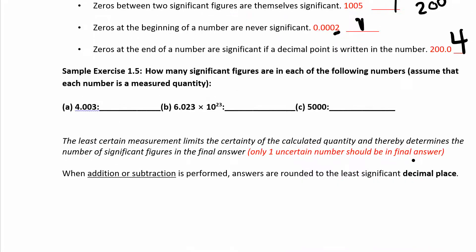Take a second to try to answer these practice questions — you can pause the video. Welcome back. In the first example, those zeros are sandwiched between two non-zero digits, so you have four sig figs. For 6.023 times 10 to the 23, don't worry about the times 10 to the 23 — that's just telling you how many zeros to add. Focus on the 6.023 part: it has a zero sandwiched between non-zero digits, so that also has four sig figs. The last one has no decimal point present, so you only have one sig fig — those trailing zeros are not significant.